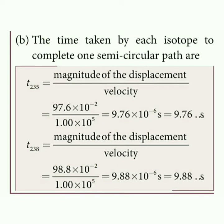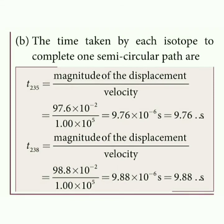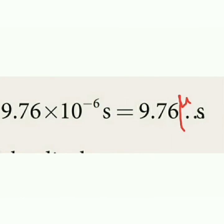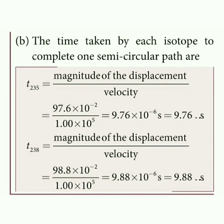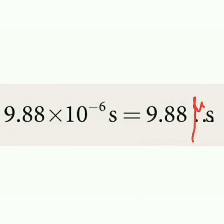For the semicircular path of Uranium-238, the time taken is 9.88 microseconds.